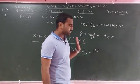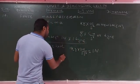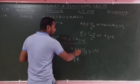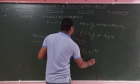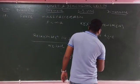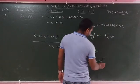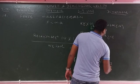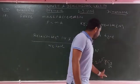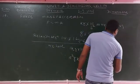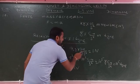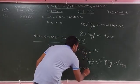In CGS: 1 dyne = 1 gram × 1 cm/s². Since 1 kg = 10³ grams and 1 meter = 10² centimeters, 1 Newton = 10³ × 10² = 10⁵ dyne. Therefore, 1 Newton equals 10 to the power of 5 dyne.